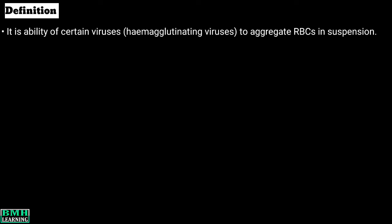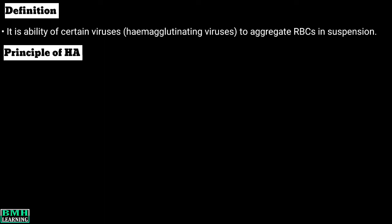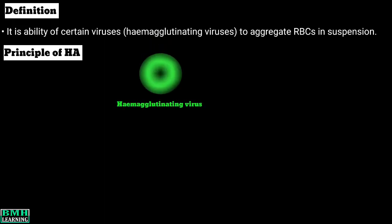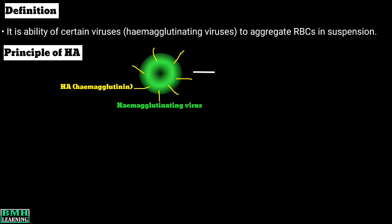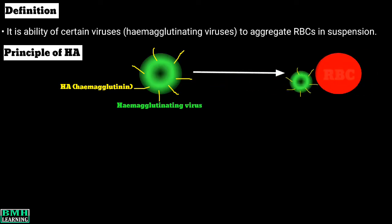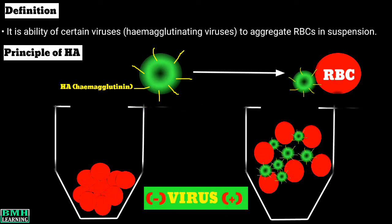We can understand this concept through the principle of HA. Hemagglutinating viruses are enveloped viruses whose envelope expresses a glycoprotein called HA, or hemagglutinin. The presence of these glycoproteins enables hemagglutinating viruses to adsorb to red blood cells.